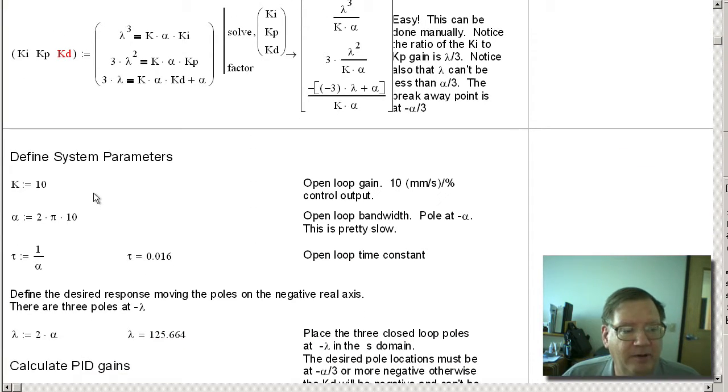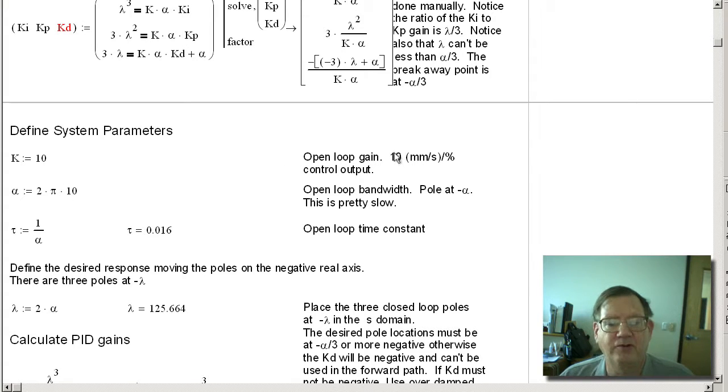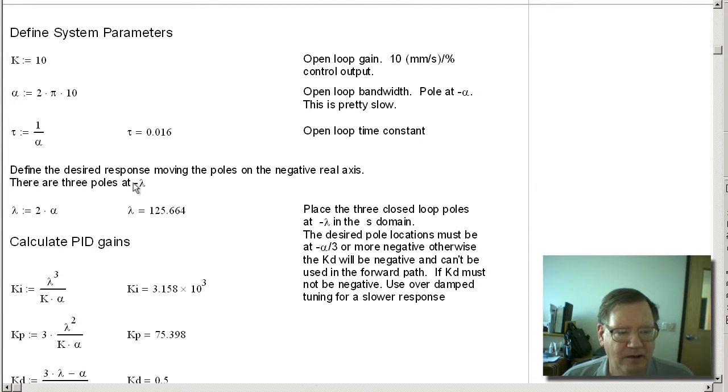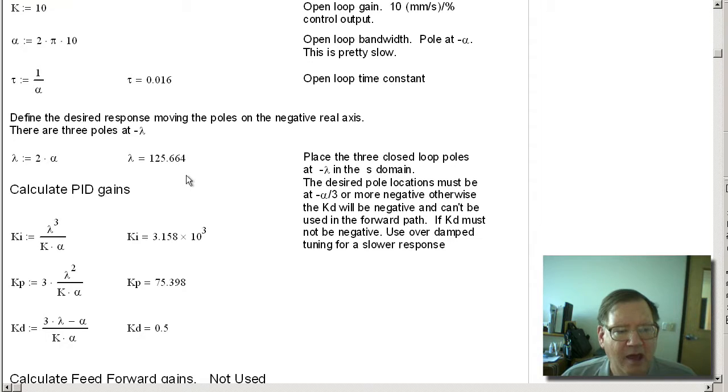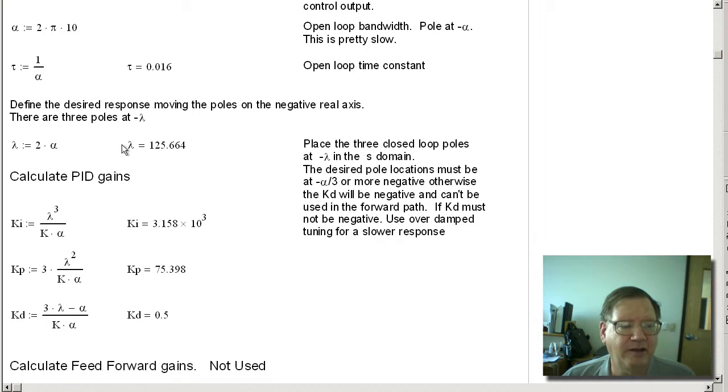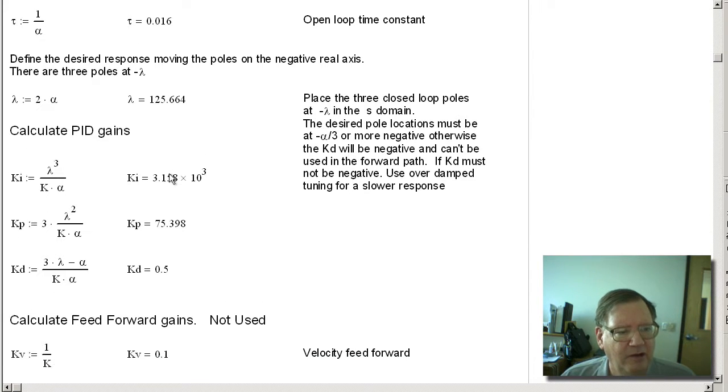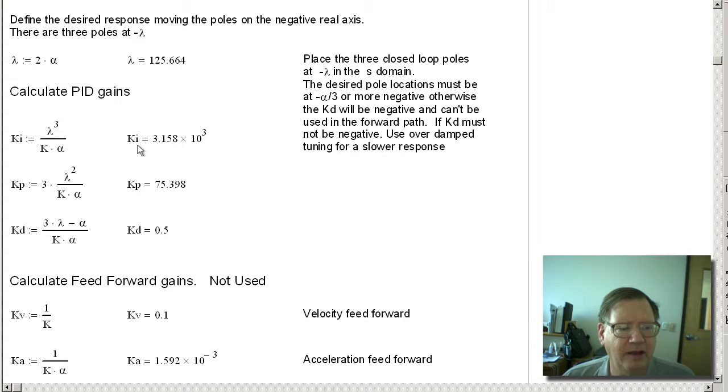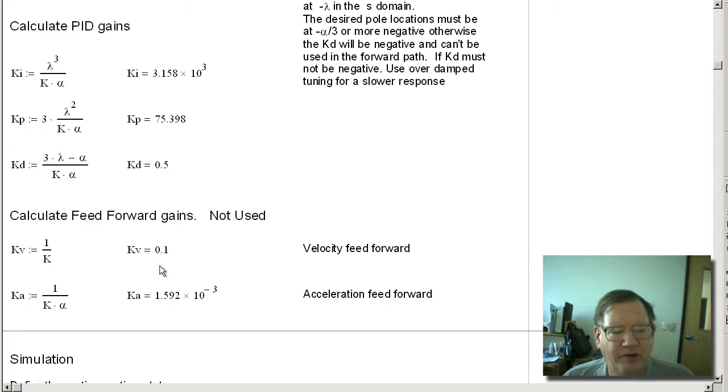So now I'm going to assign some parameters. I've got my open loop gain, which is 10 millimeters per second per percent, so my maximum velocity is going to be 1,000 millimeters per second. And I have my alpha, which is the bandwidth. It's not very fast, but that's so that we can see the nice curves on the graphs. This would be the time constant, the open loop time constant. And what we're going to do is we're going to place the three poles at minus 2 times alpha. And that's going to increase the bandwidth, the closed loop bandwidth, by quite a bit. So by making those substitutions, we can calculate ki, kp, and kd and feed forwards, although we're not using those.